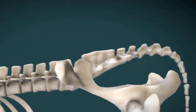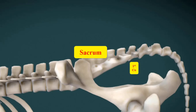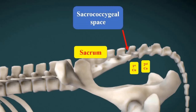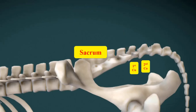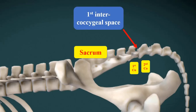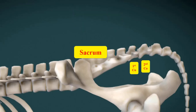Here are the five fused sacral bones. This is the first coccygeal bone and here is the second coccygeal bone. The space between the sacrum and the first coccygeal bone is called the sacrococcygeal space, and it is sometimes used for epidural injection in cattle. The space between the first and second coccygeal bones is called the first coccygeal space, and it is the most popular site for epidural injection in cattle.